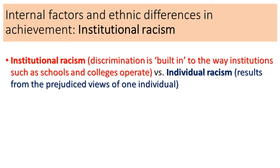When looking at institutional racism, it's important to differentiate it from individual racism. Institutional racism refers to discrimination that is built into the way institutions such as schools and colleges operate - it can sometimes be difficult to identify. Individual racism, by contrast, results from the prejudiced views of one individual. A single racist teacher in a school that actively promotes multiculturalism and equality would be an example of individual racism in a non-racist institution.